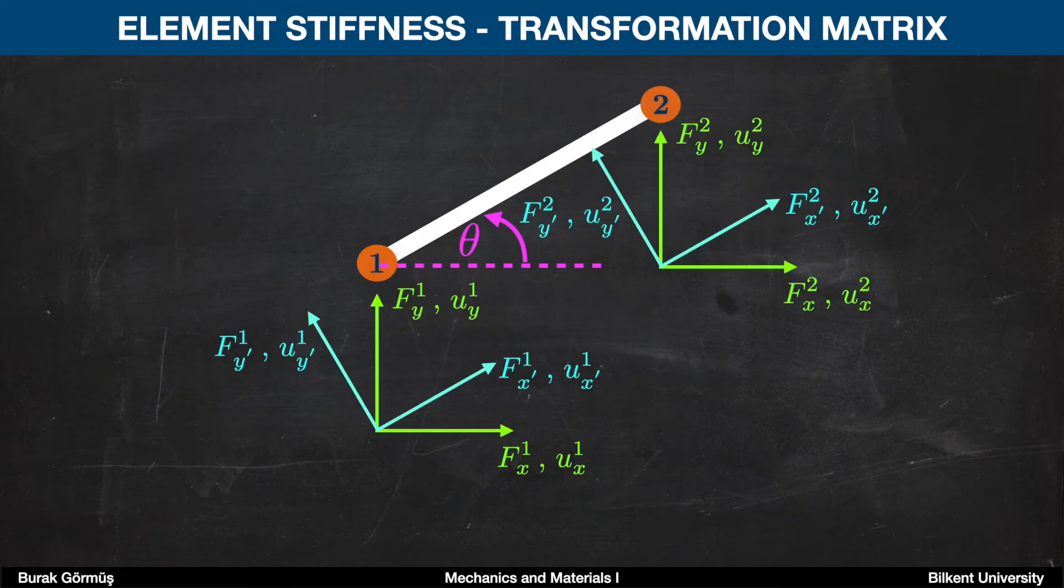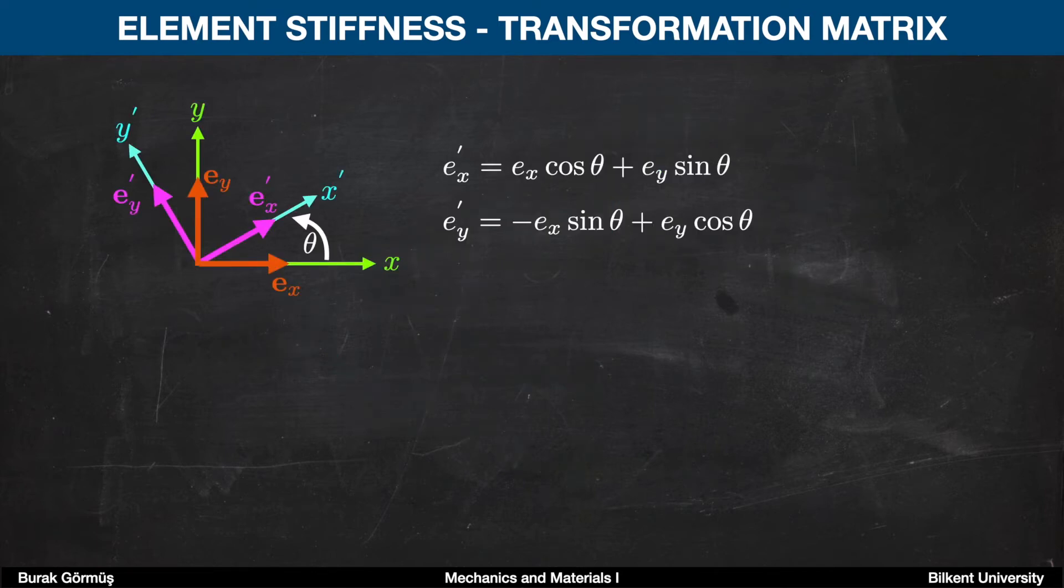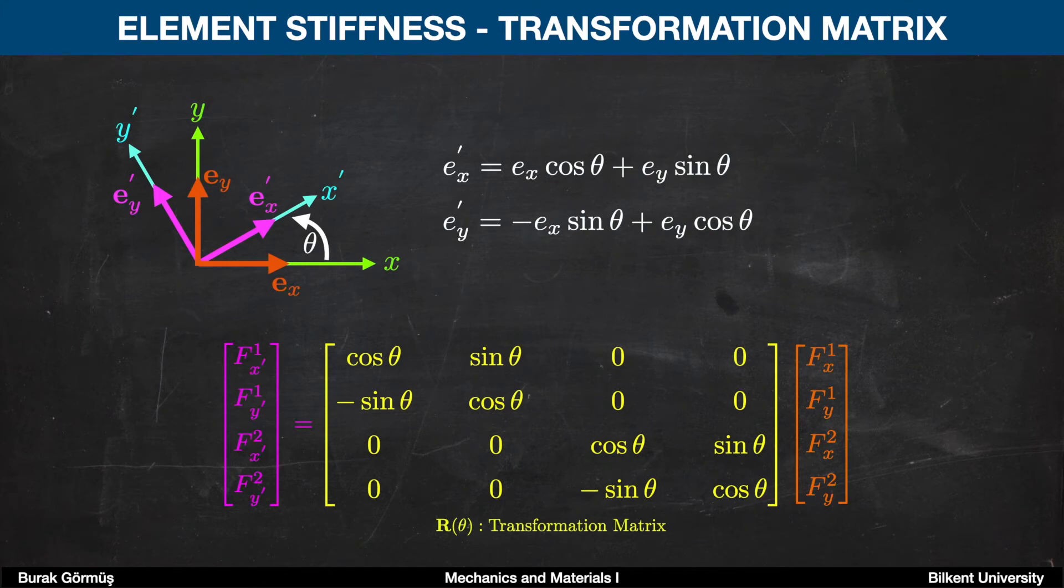Let's start with obtaining the transformation matrix. In this slide, you're seeing two coordinate systems that need to be transformed. The coordinate system in blue needs to be converted into the coordinate system in green, so that we can express everything using the global x-y coordinate system. To achieve that, let's take unit vectors along x and y for each coordinate system, and we can express the transformation equations as shown here. As a result, we can express the force transformation using the transformation matrix in yellow. We can perform the same thing for nodal displacements too.